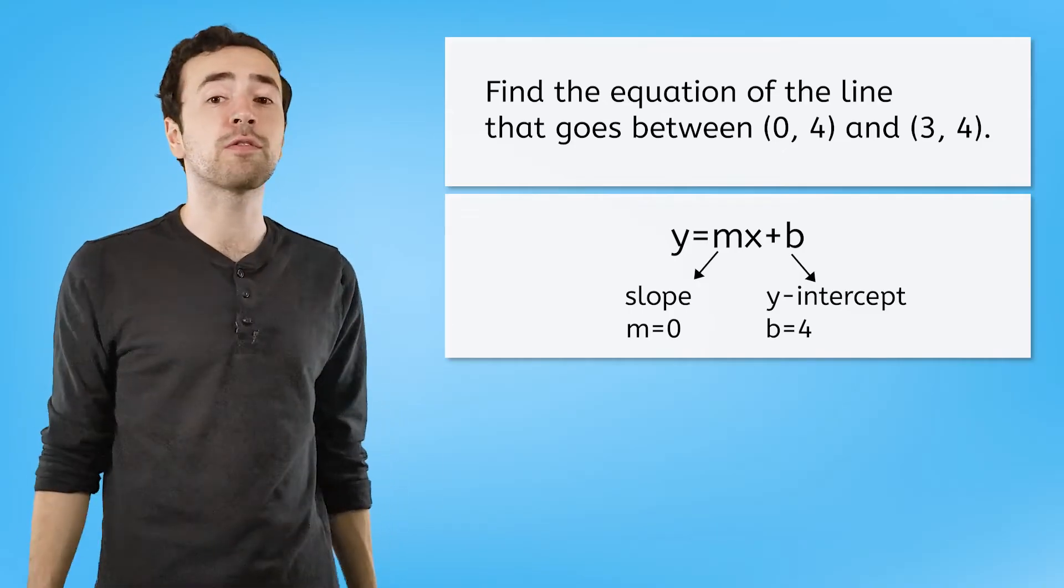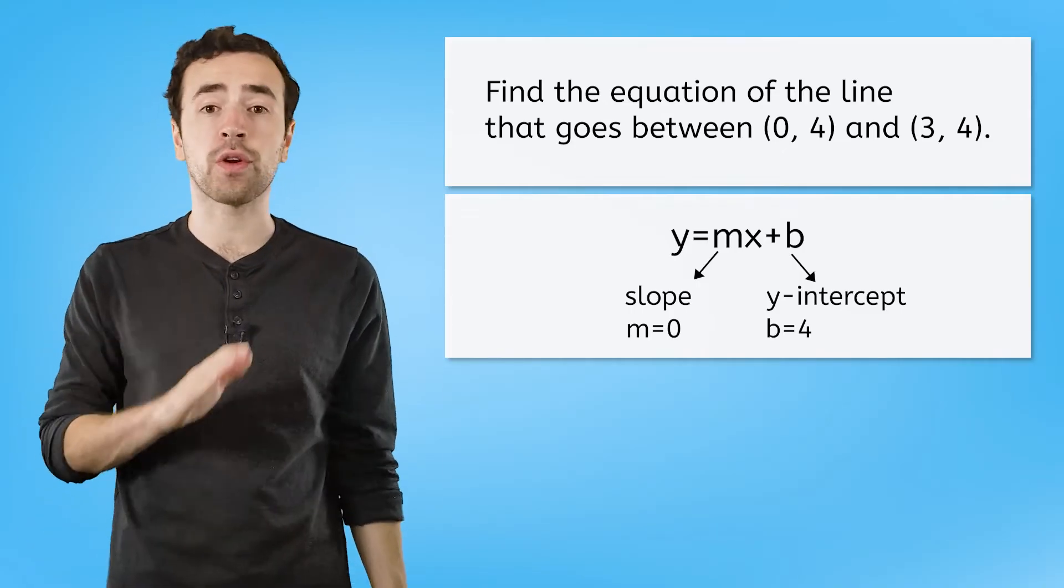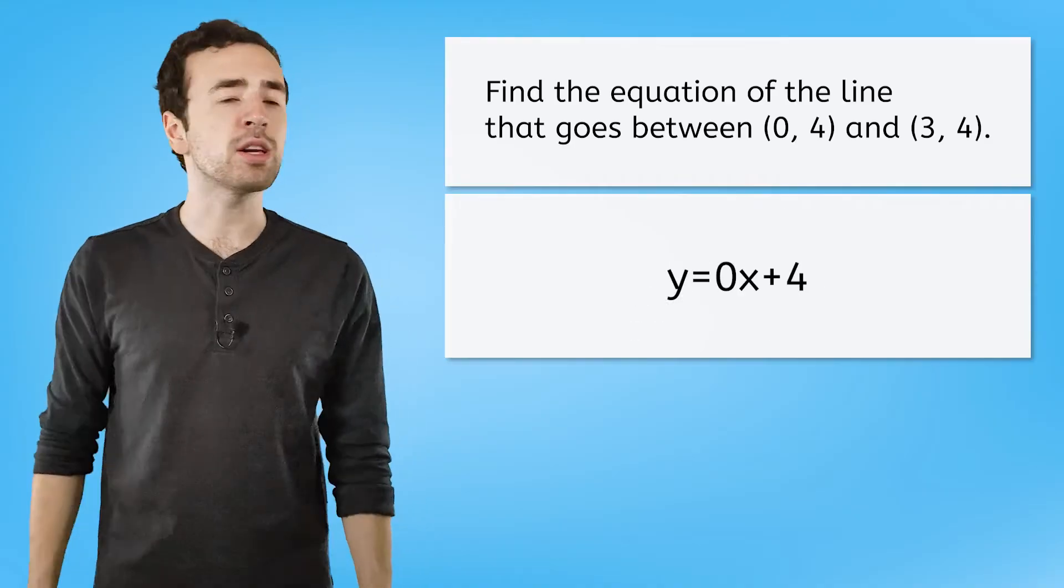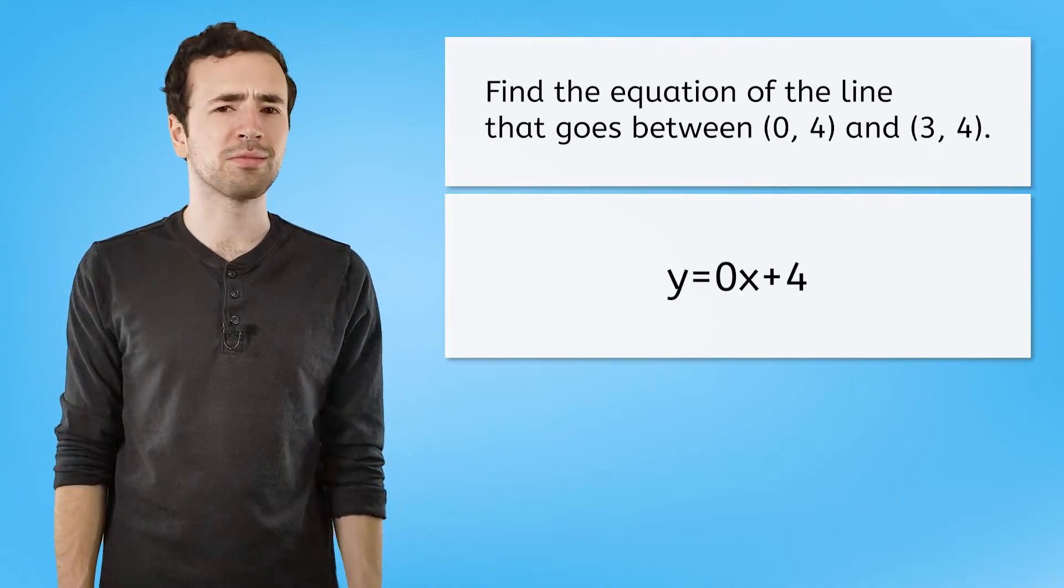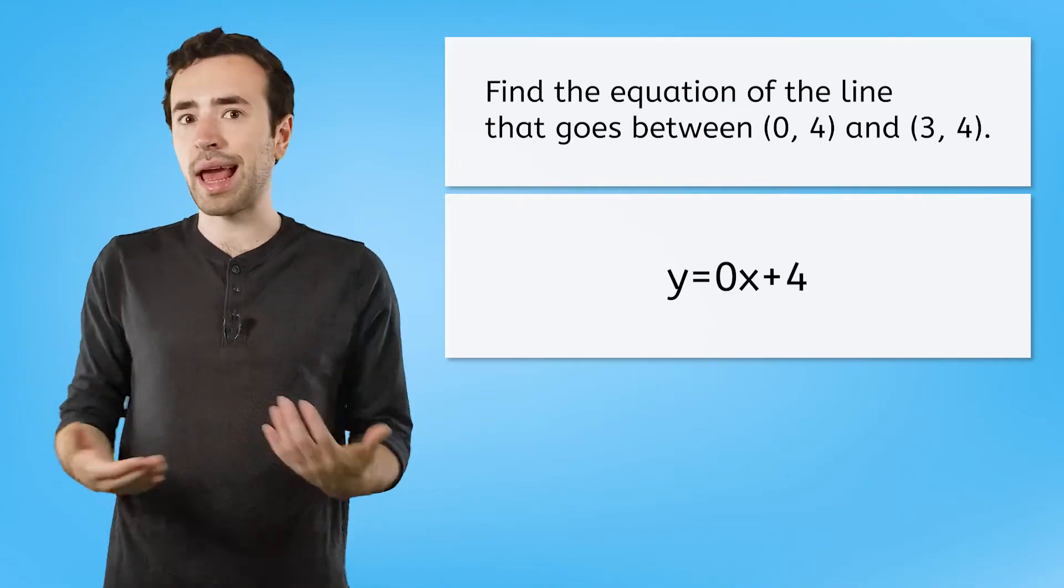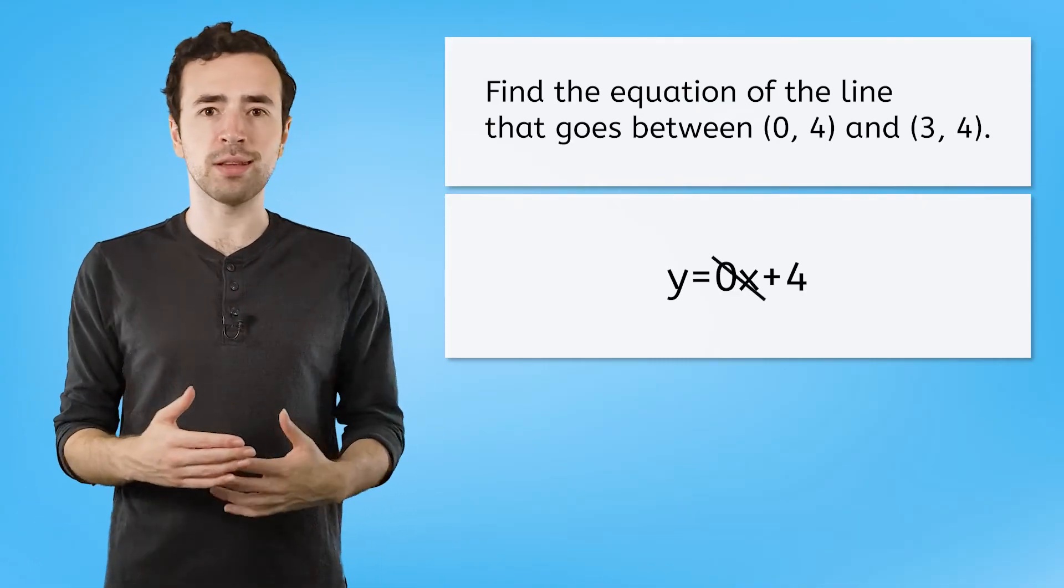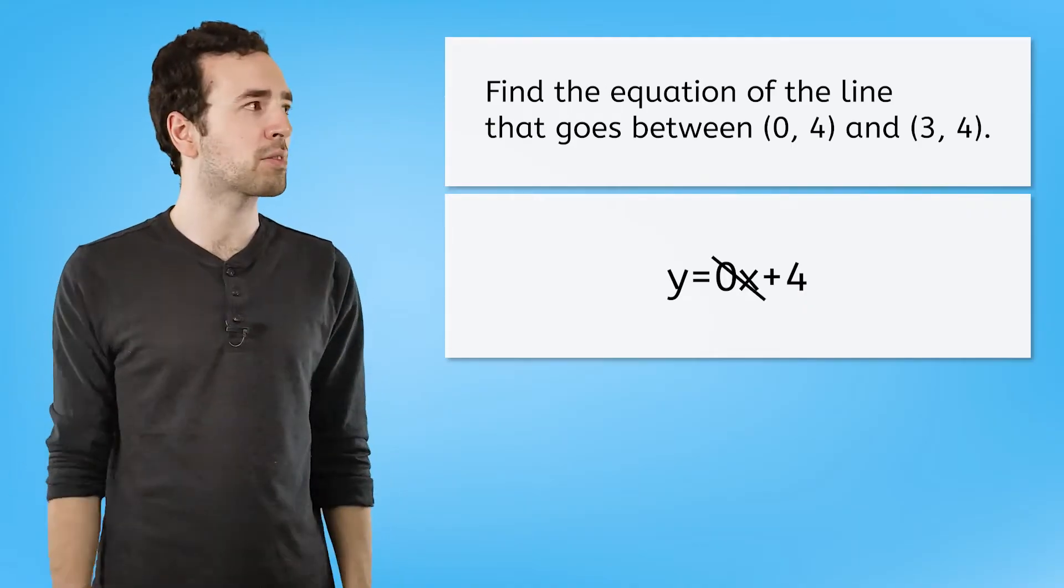But what will this do to our equation? If we substitute in 4 for b and 0 for m, we get y equals 0x plus 4. But what happens to 0x? No matter what x is, 0x will be 0. So we could just get rid of this entire term.